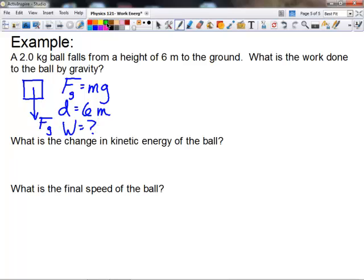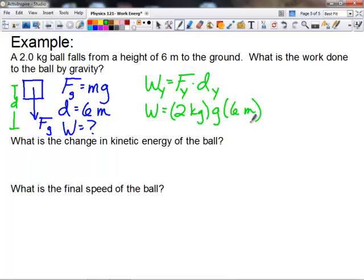Because the distance and the force share a component there in the same direction, we can just simply multiply the force times the distance to get the work done. So work equals force times distance. In this case, it's the work in the y direction equals the force applied in the y direction times the distance in the y direction. So we'll say work done is the force, which is going to be two kilograms times g times six meters. So we'll plug that in our calculator, and we will get that two times 9.8 times six gives us a value of 117.6 joules. Kilograms times the meters per second squared in the g gives you the newtons. Newtons times meters gives you the joules. So real straightforward there.